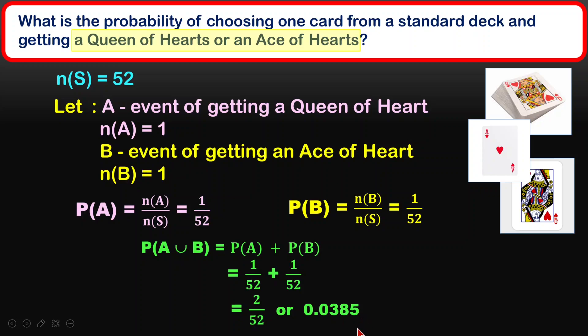In STPM, decimal places have to be to 4 significant figures. Let's look at another one.